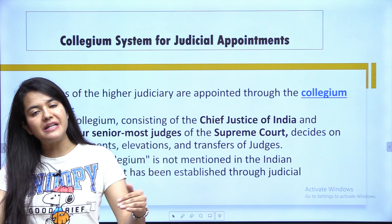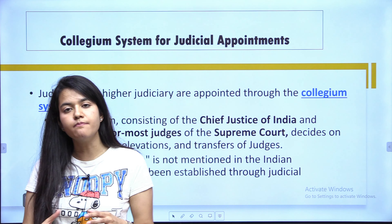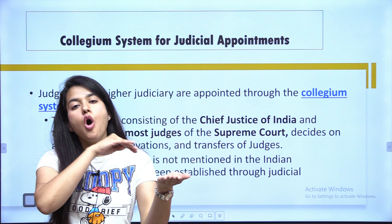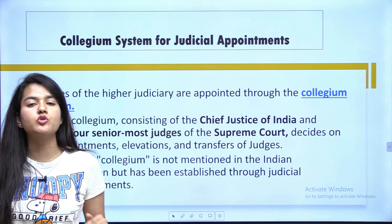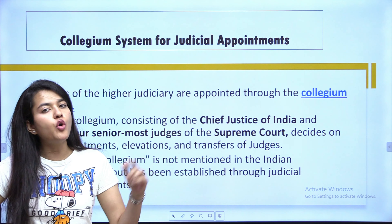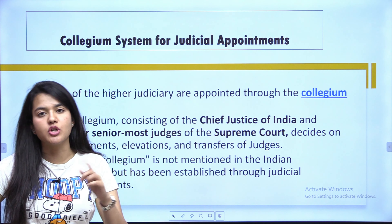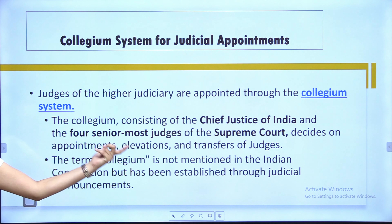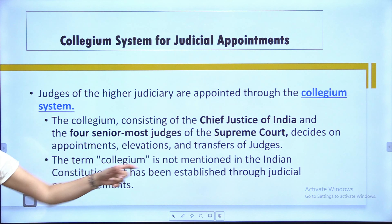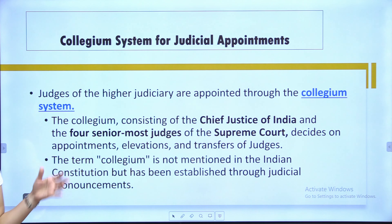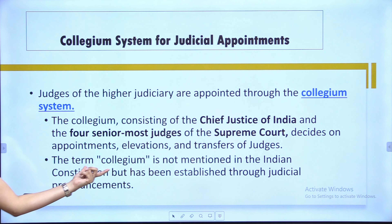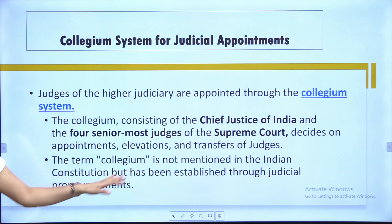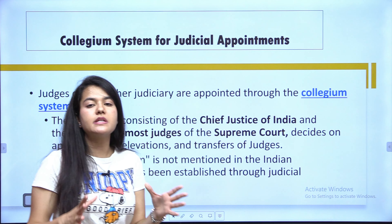Next, what are the qualifications? This is very important. Remember the article numbers, as they are important for your exam papers. Article 124, clause 3 of the Constitution states: a person can be appointed as a judge of the Supreme Court if — number one — the person must be a citizen of India. You must remember the qualifications given in the Constitution.